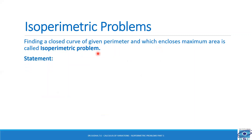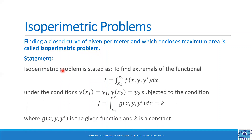The statement of the isoperimetric problem: to find extremals of the functional I = integral from x1 to x2 of f(x, y, y') dx, under the conditions y(x1) = y1 and y(x2) = y2, subjected to the constraint J = integral from x1 to x2 of g(x, y, y') dx = k, where g(x, y, y') is the given function and k is a constant.